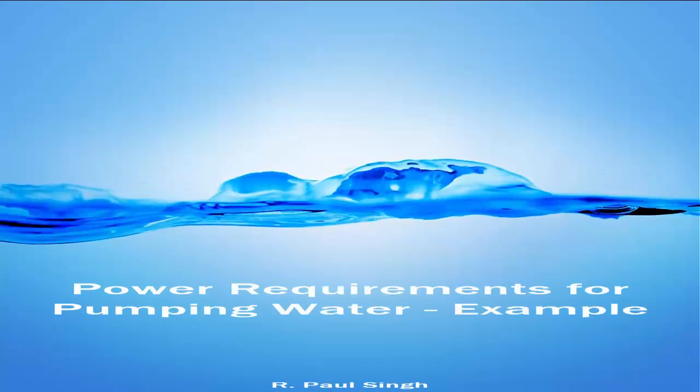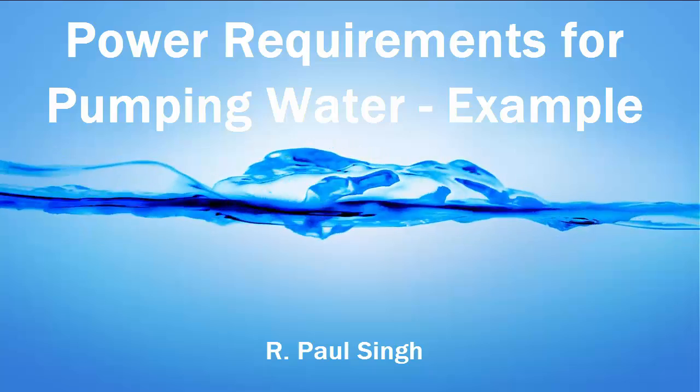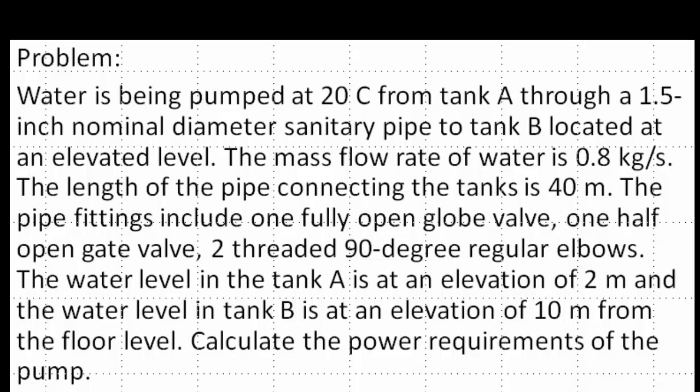In this tutorial we will solve a problem involving pumping water from one tank to another. Water is being pumped at 20 Celsius from tank A through a 1.5 inch nominal diameter sanitary pipe to tank B, which is located at an elevated level. The mass flow rate of water is 0.8 kilograms per second.